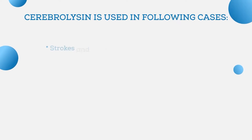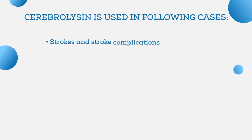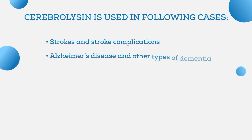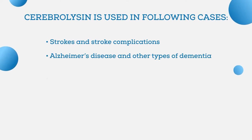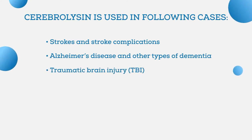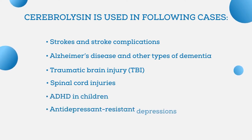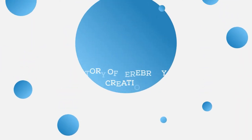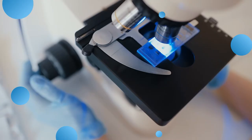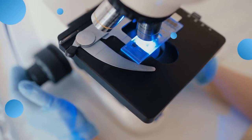Cerebrolysin is used for many cerebral conditions, including: strokes and stroke complications, Alzheimer's disease and other types of dementia, traumatic brain injuries (TBI), spinal cord injuries, ADHD in children, antidepressant-resistant depression, and so on.